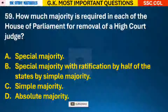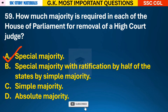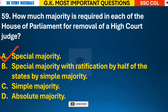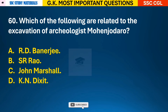Question 59: How much majority is required in each House of Parliament for removal of a High Court Judge? Answer A - it requires special majority. Question 60: Which of the following are related to the excavation of archaeologist Mohenjo-daro? Answer A - it was R.D. Banerjee.